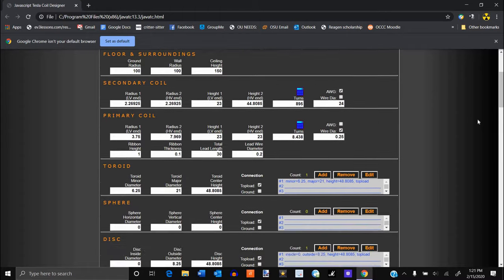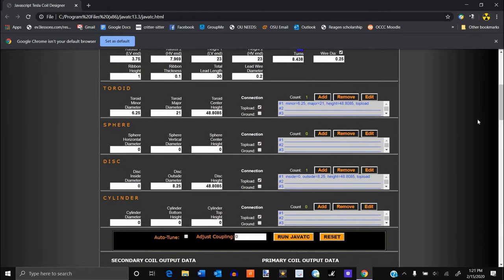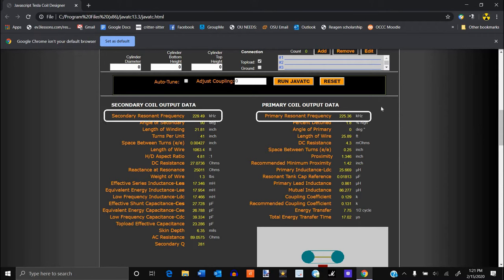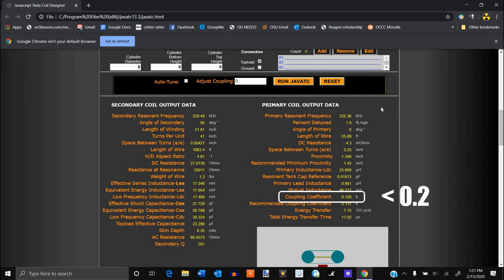After you've inputted your coil specifications into the program and clicked run, there are three main values you need to look at: the primary resonant frequency, the secondary resonant frequency, and the coupling coefficient. The first two values should be fairly similar, while the last value should be less than 0.2.